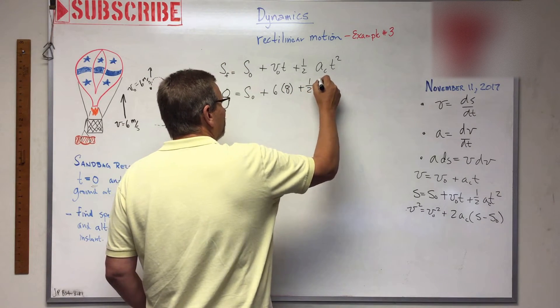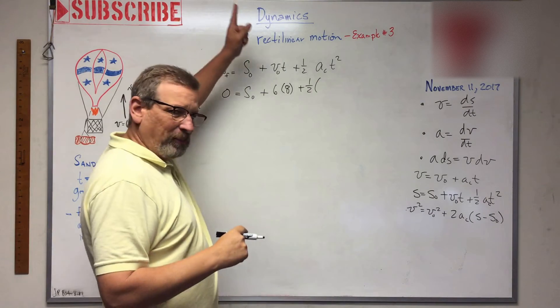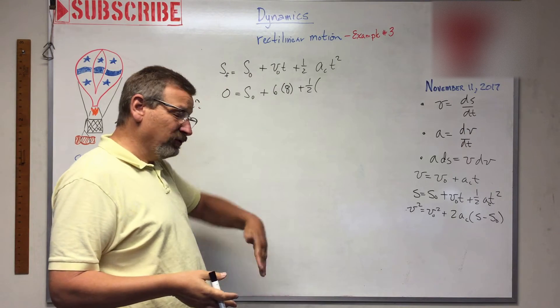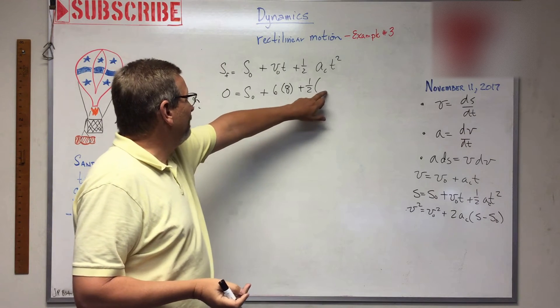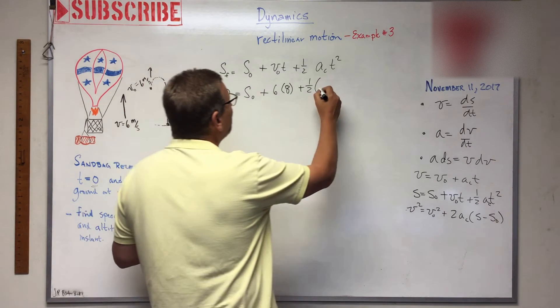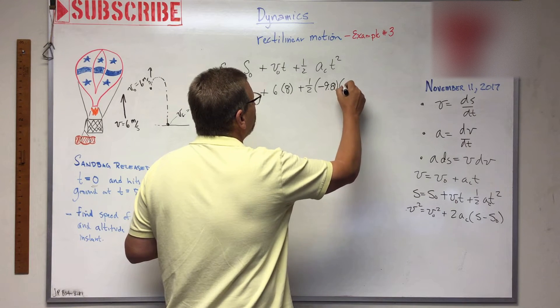Plus one half, what's the acceleration? Now I'm going to assume that up is positive and down is negative - that just works for me. You can assume down is positive if you want and then your gravity acceleration would be positive, but I like it to be negative. That just makes sense in my brain.